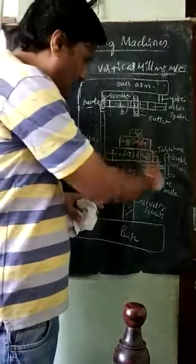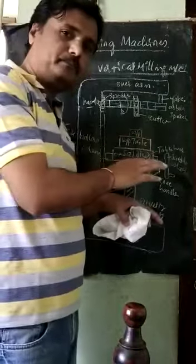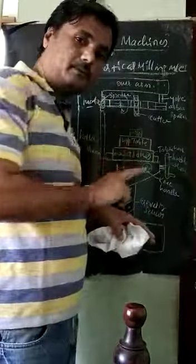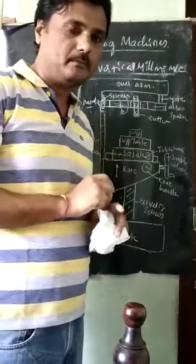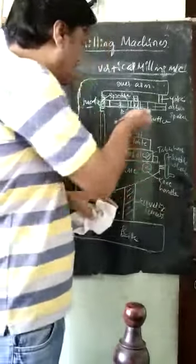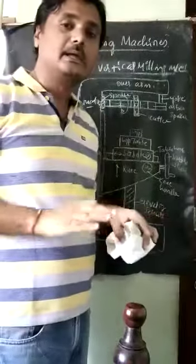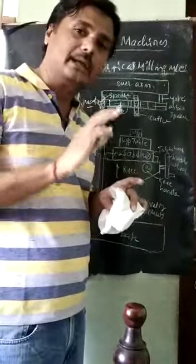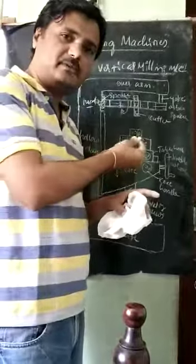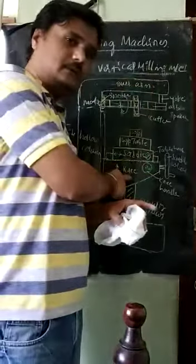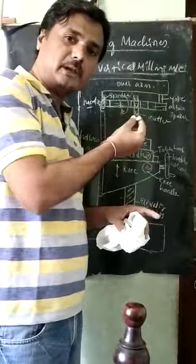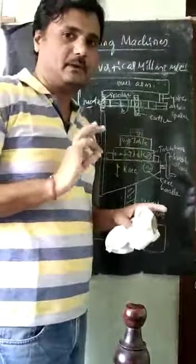The bottom part is there at the bottom side — the part we have drawn to give support to the workpiece and for its movement. That will remain the same for the vertical milling machine. The workpiece can move up and down by the knee, horizontal movement by the saddle, and it can move perpendicular from the blackboard by the work table. This is the same here.